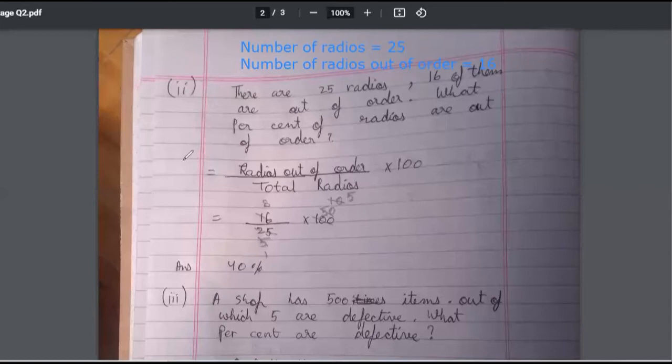Here what will we write here? What will we write here quickly? Percentage, percentage of radios are out of order. So we will write radios out of order percent. So this is fine. So 16 were there.